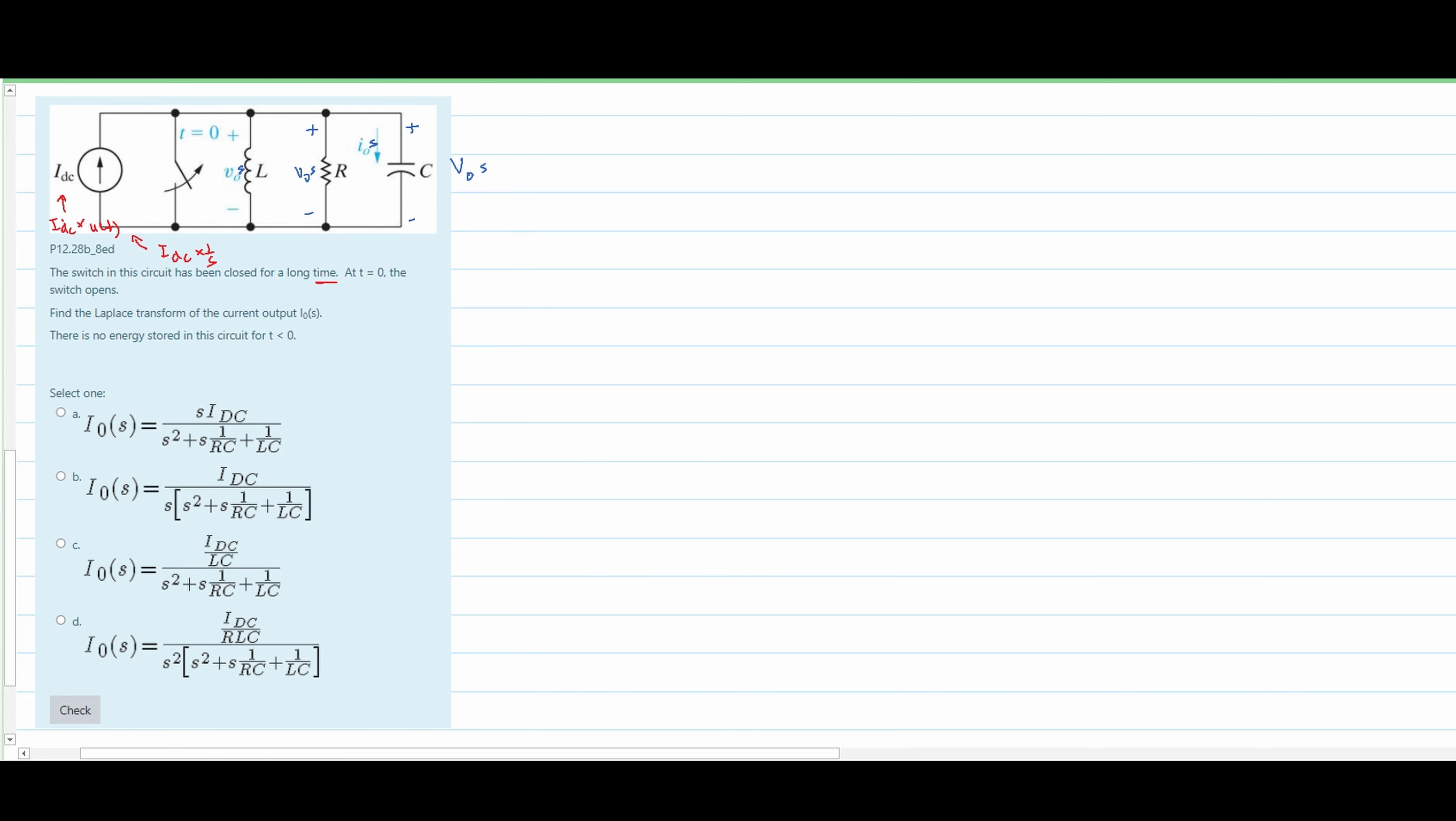Now we need to convert the inductor and capacitance to the time domain. We are going to have Zs of L, and this is equal to L times s. Similarly, for capacitance, we are going to have Zs of C, and this is equal to 1 over capacitance times s.